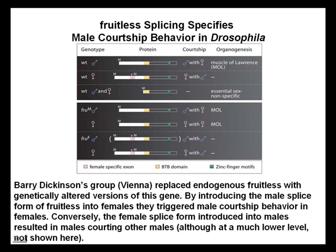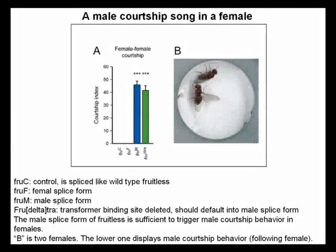Fruitless splicing specifies male courtship behavior in Drosophila. Barry Dickinson's group at Vienna replaced endogenous fruitless with genetically altered versions of the gene. By introducing the male splice form of fruitless into females, they triggered male courtship behavior in females. Conversely, the female splice form introduced into males resulted in males courting other males. Fruit-F is the female splice form, Fruit-M is the male splice form, and Fruit-delta-transformer has the transformer binding site deleted, defaulting to the male splice form since transformer is required for female splicing. The male splice form of fruitless is sufficient to trigger male courtship behavior in females. Panel B shows two females; the lower one displays male courtship behavior, following the female and attempting to mate.